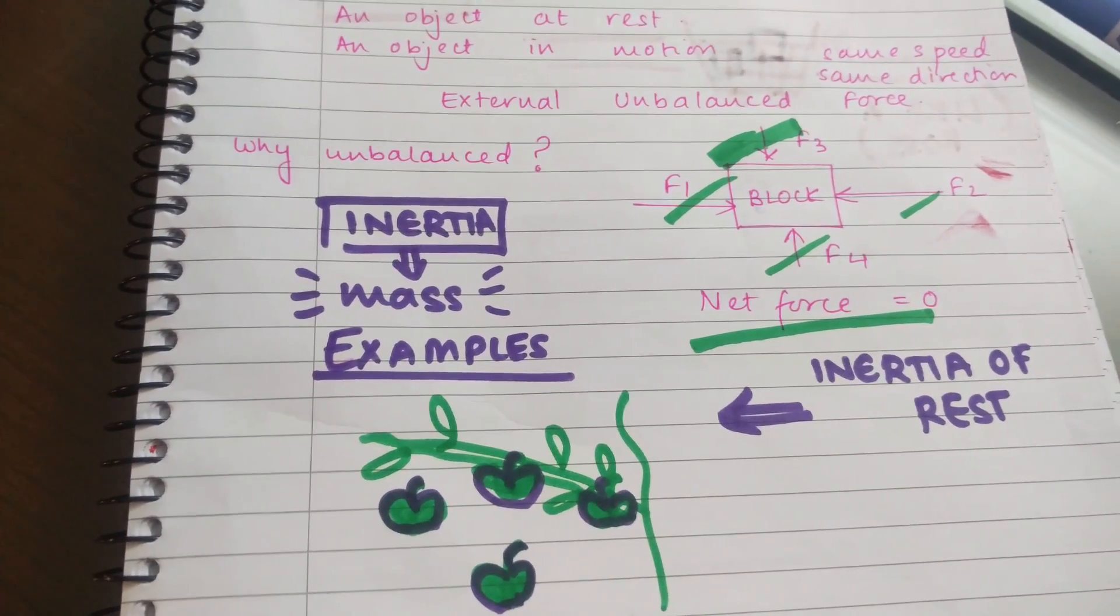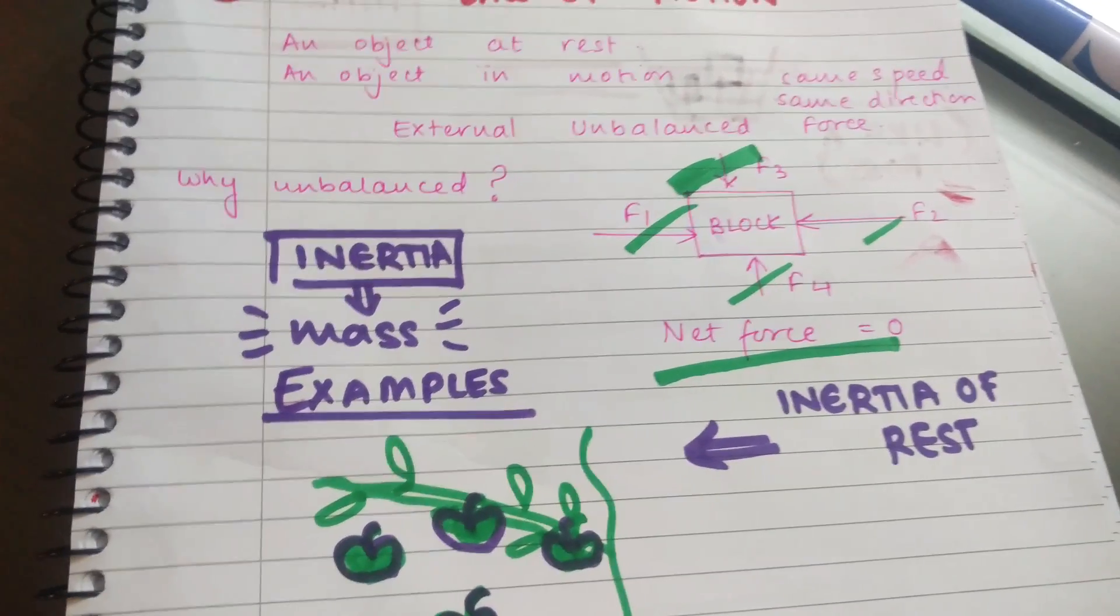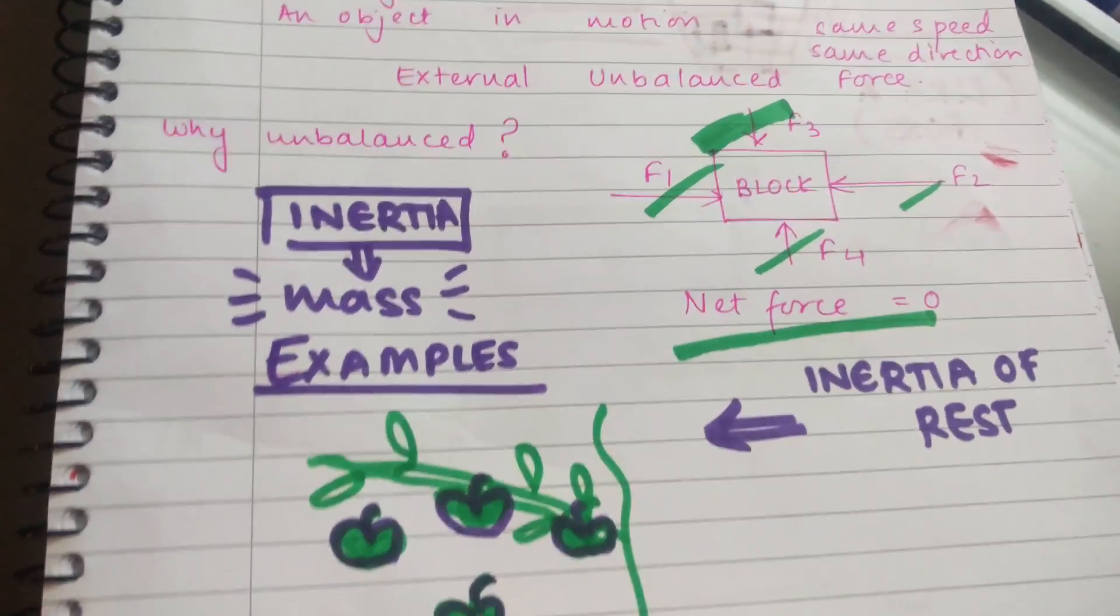So, what does inertia or the tendency to remain in the state it is in depend upon? It depends upon mass. This is actually quite simple to understand.